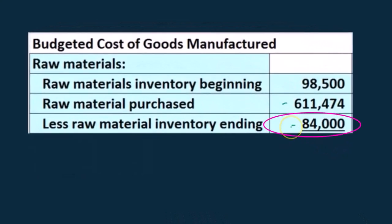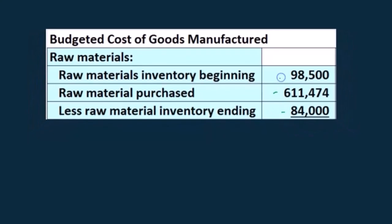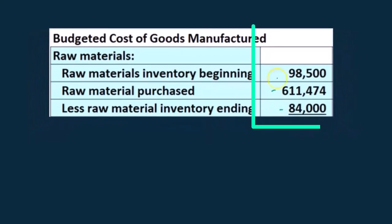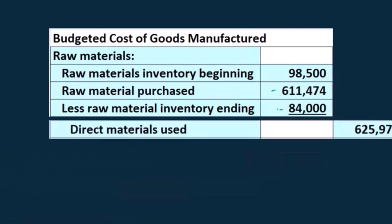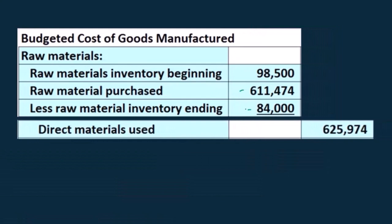We're subtracting out the $84,000. Back in the budgeted cost of goods manufactured, we had beginning balance $98,500 plus purchases $611,474 minus the $84,000 ending balance, and that gives us the direct materials used in the process: $625,974.